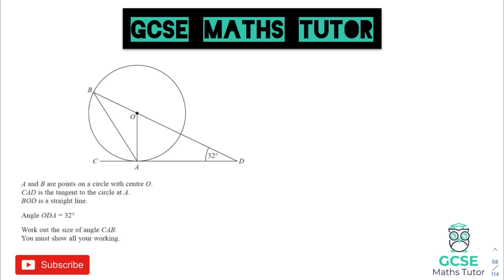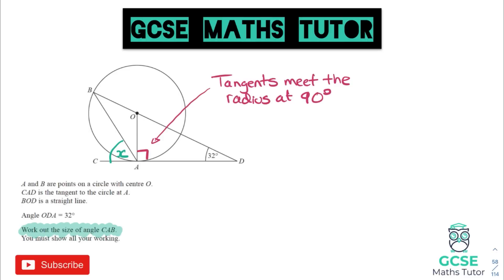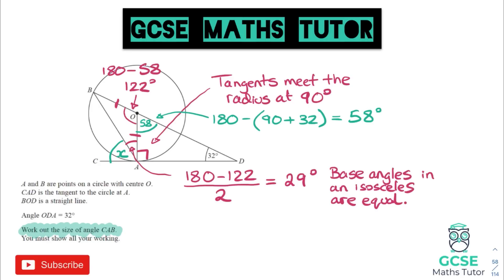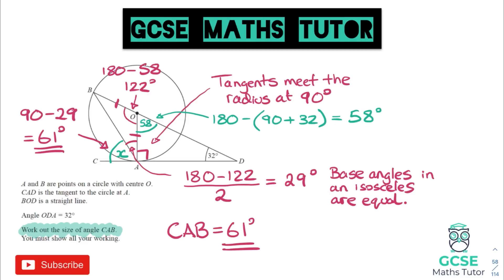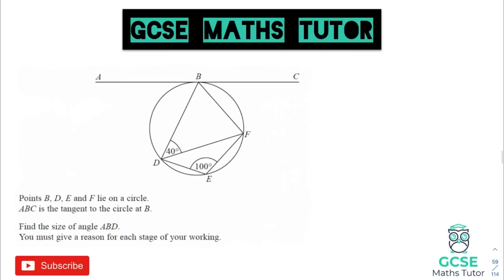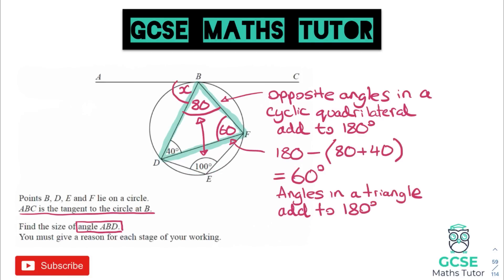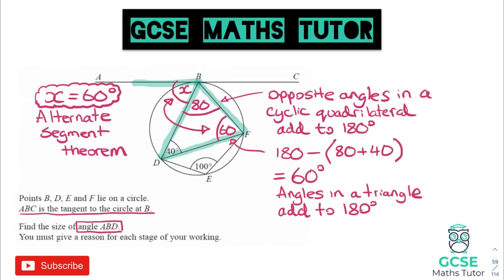For circle theorems, know lots of them — spot things like tangent to a radius and put a right angle in if needed. Apply circle theorems alongside angles in a triangle, angles on a straight line, and don't forget isosceles triangles which are very common. For a cyclic quadrilateral with a tangent, use the alternate segment theorem. Here: opposite angles in a cyclic quadrilateral add to 180, angles in a triangle add to 180, and then applying the alternate segment theorem gave a relatively quick solution.